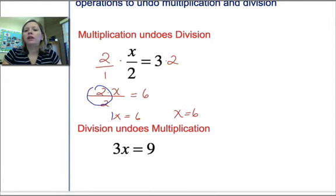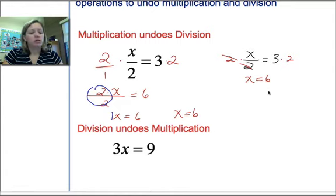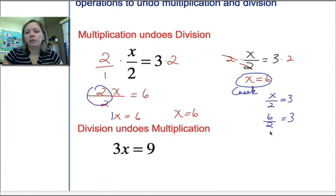Usually, you're just going to write: if we had X over 2 equals 3, we multiply both sides by 2. Then 2 divided by 2 is 1, so that leaves X. 3 times 2 is 6. We're done. Now the last thing we should do is check our answer — plug it back into the original equation. X over 2 equals 3, and X equals 6. 6 divided by 2 equals 3. 3 equals 3. We have a check.